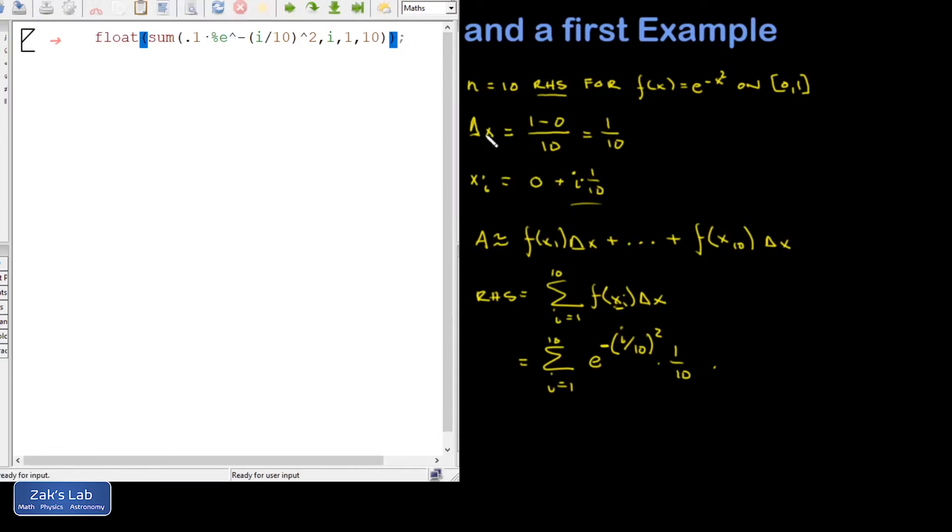So here we are in Maxima and I've written the sum of 0.1, that's the 1/10 for the rectangle width, times %e, that's the special symbol for e in Maxima, to the negative (i over 10) squared as i goes from 1 to 10. I put float out in front in order to get a decimal approximation from this. So I'm going to hit shift enter and I get 0.7146, etc. I'm just going to keep three decimal places here, so 0.715.